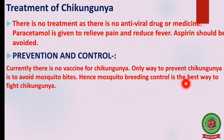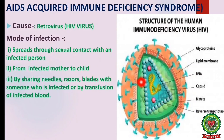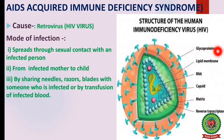Lastly, we discuss AIDS — Acquired Immunodeficiency Syndrome — which is caused by HIV. Structurally, HIV is a retrovirus containing single-stranded RNA. It also carries the enzyme reverse transcriptase. The outer wall of this virus contains a glycoprotein called gp120, which has a non-antigenic layer.